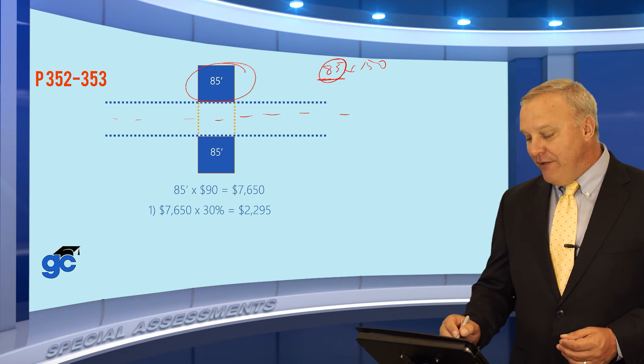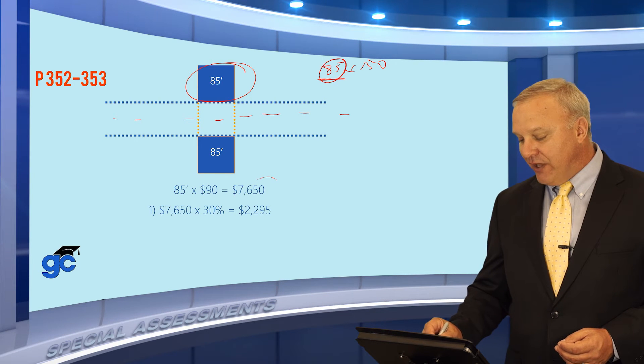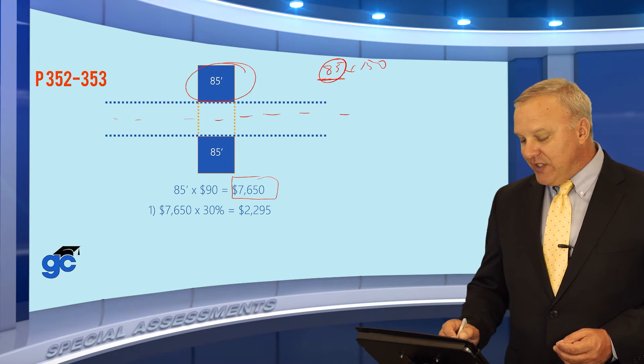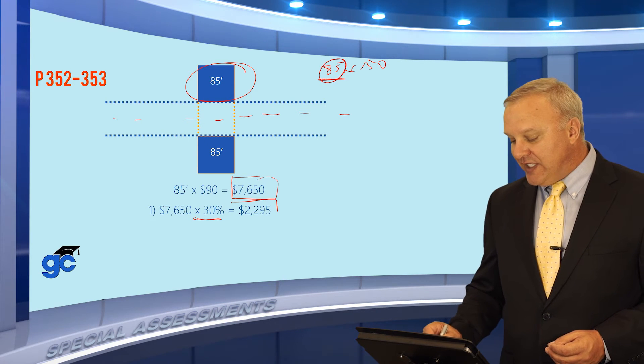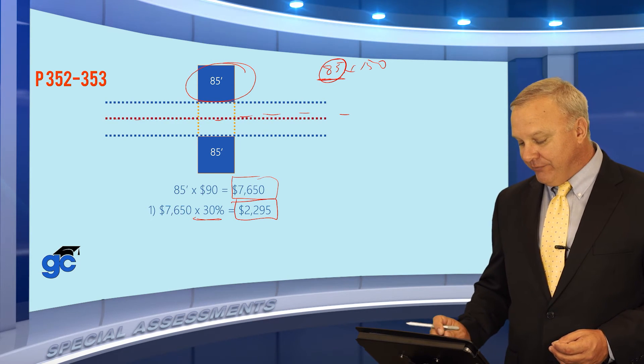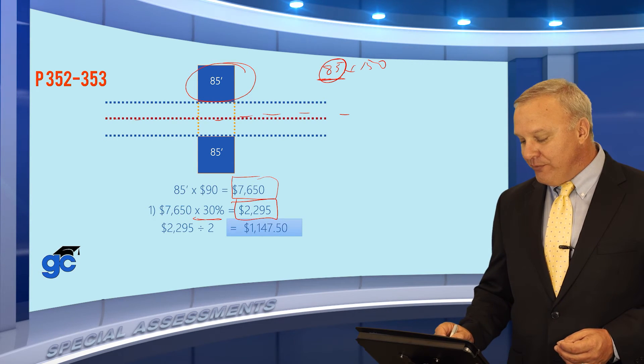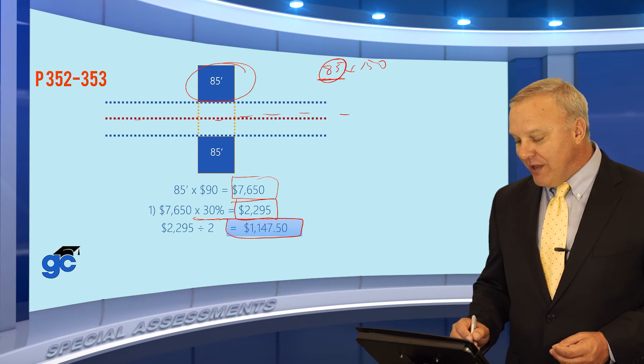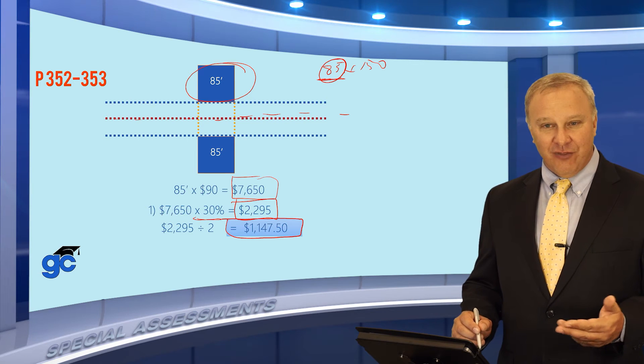Let's take one step further. 85 feet times $90 is a total cost of $7,650. $7,650 times 30% tells you what the city's share is going to be. But remember there are two sides of the street, so if we divide that by two, then each of the homeowners will save $1,147.50 because the city is paying 30% of this cost.